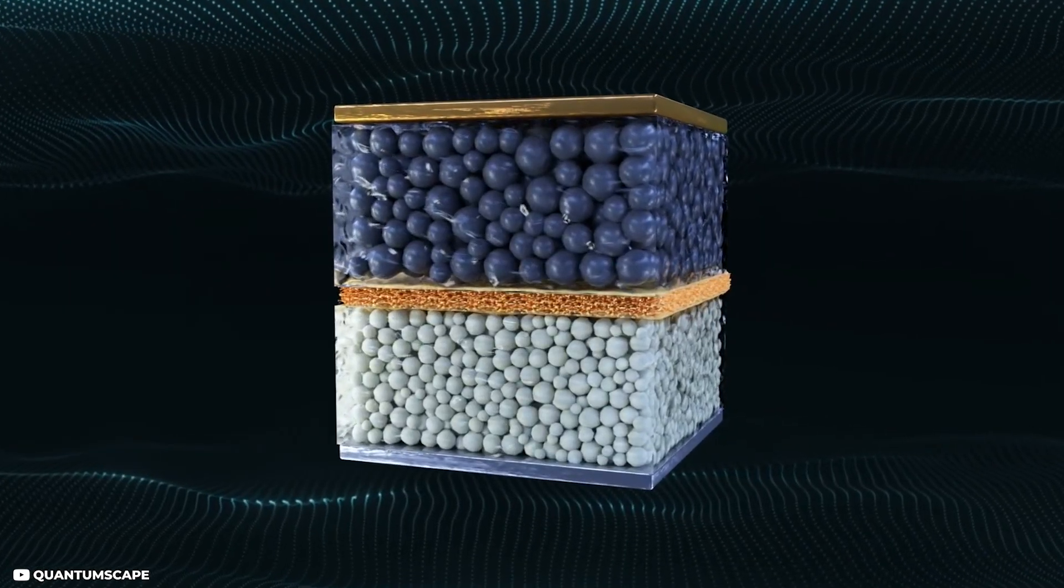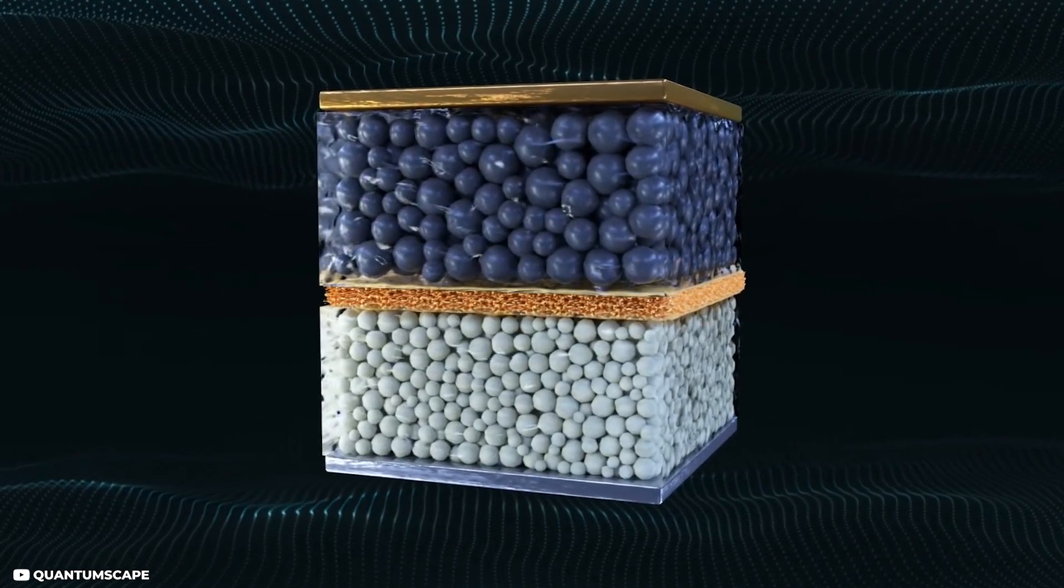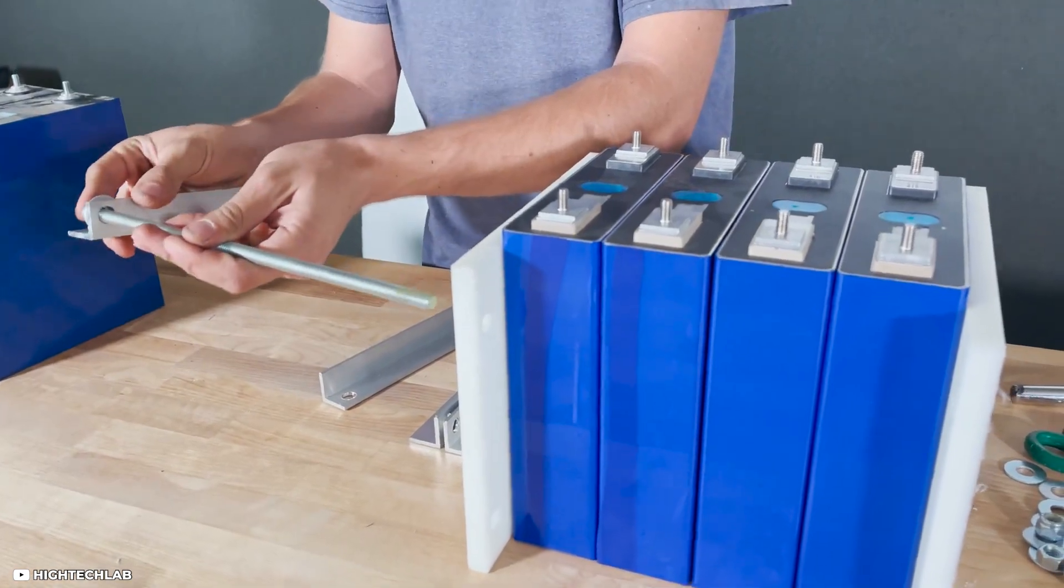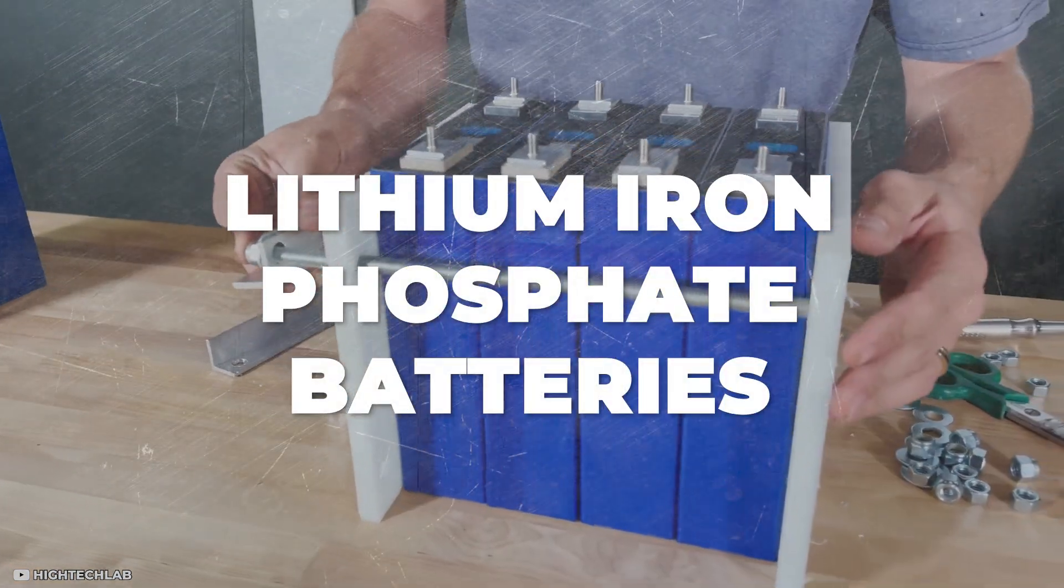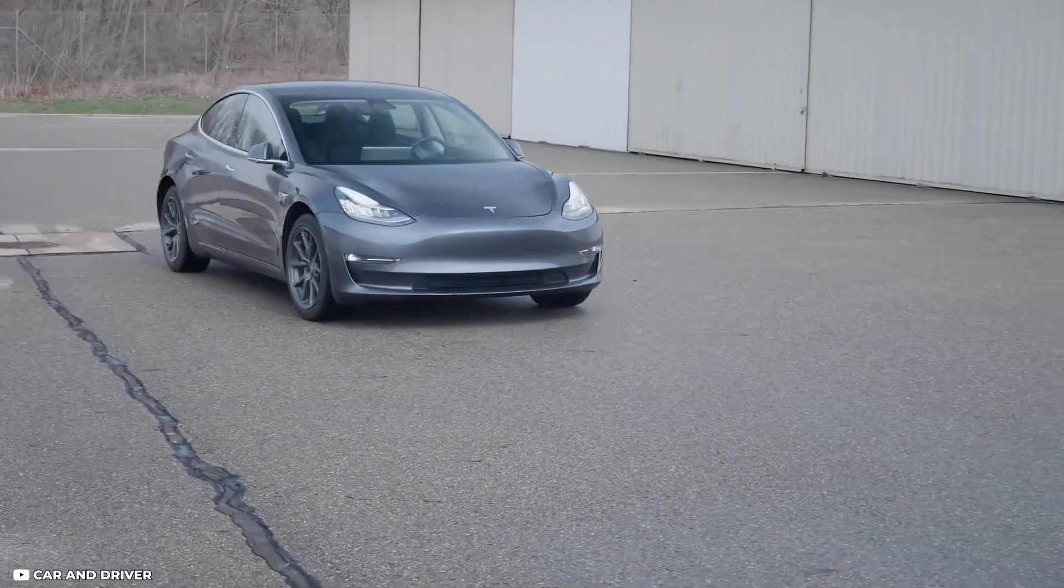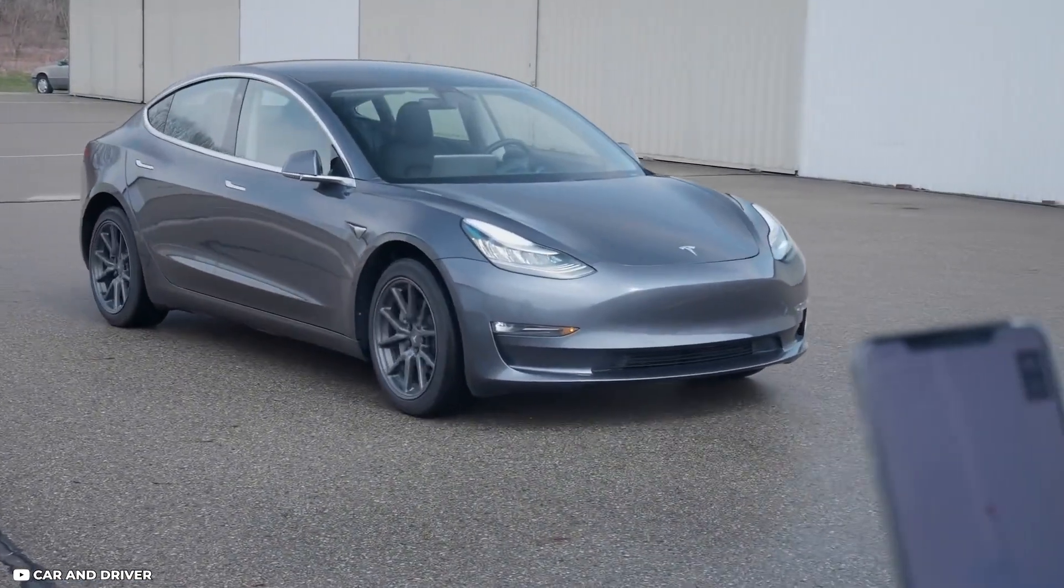The company GMG has so far achieved 150 watt-hours per kilogram in the laboratory, which is significantly less than the theoretical energy density of 1060 watt-hours per kilogram. This achieved laboratory result is comparable to lithium iron phosphate batteries, shortly called LFP batteries. These are also built into the Tesla Model 3, for example.